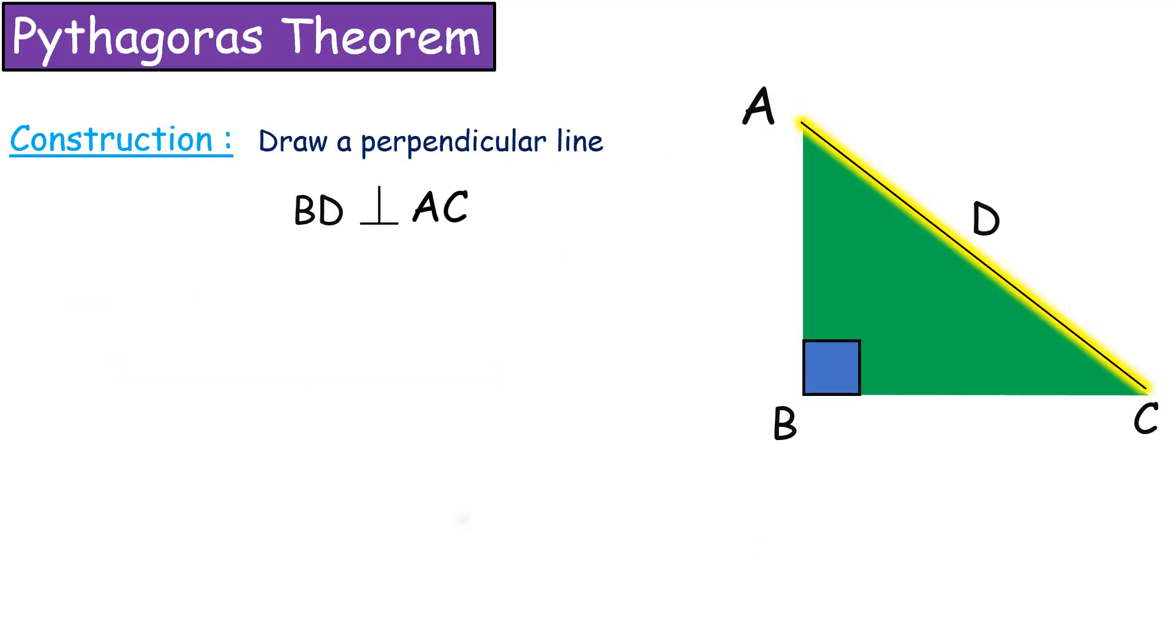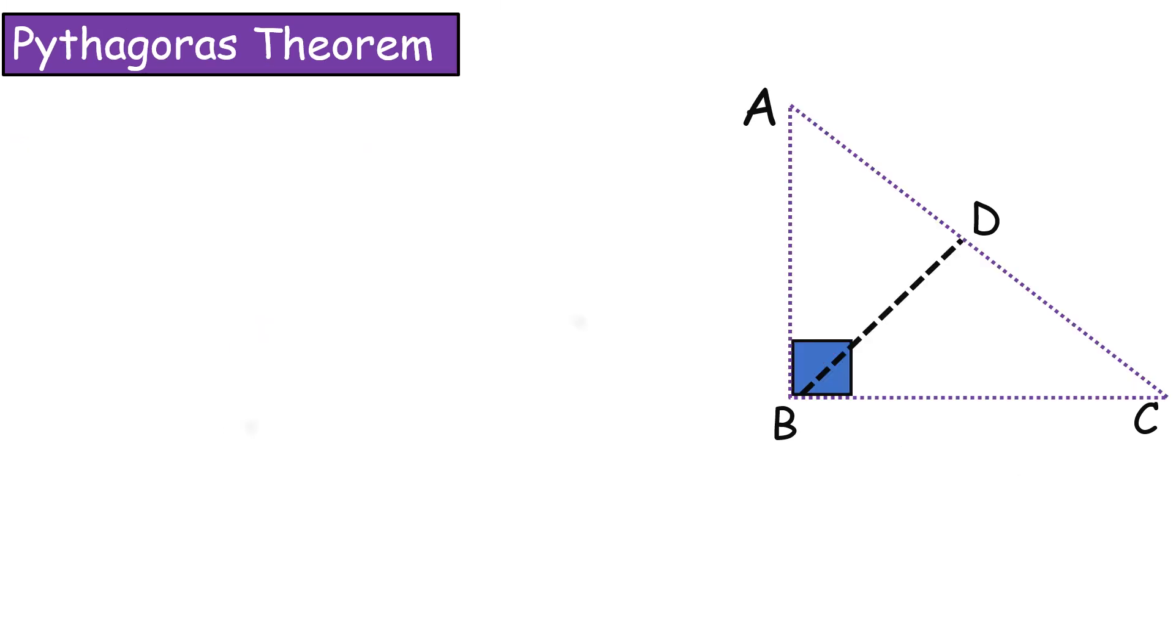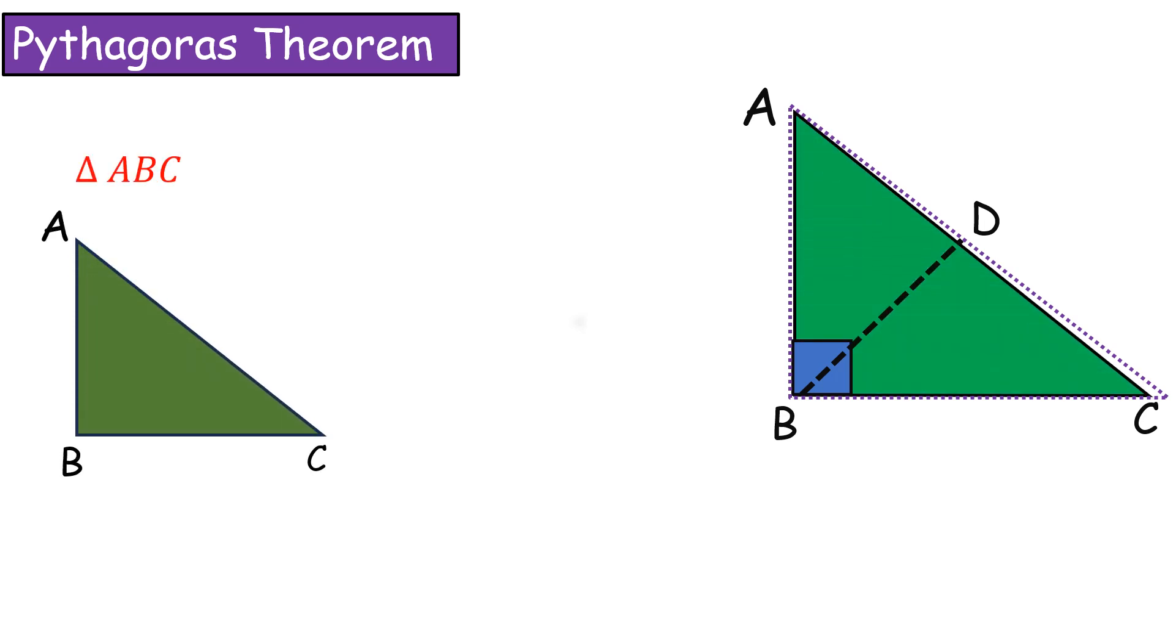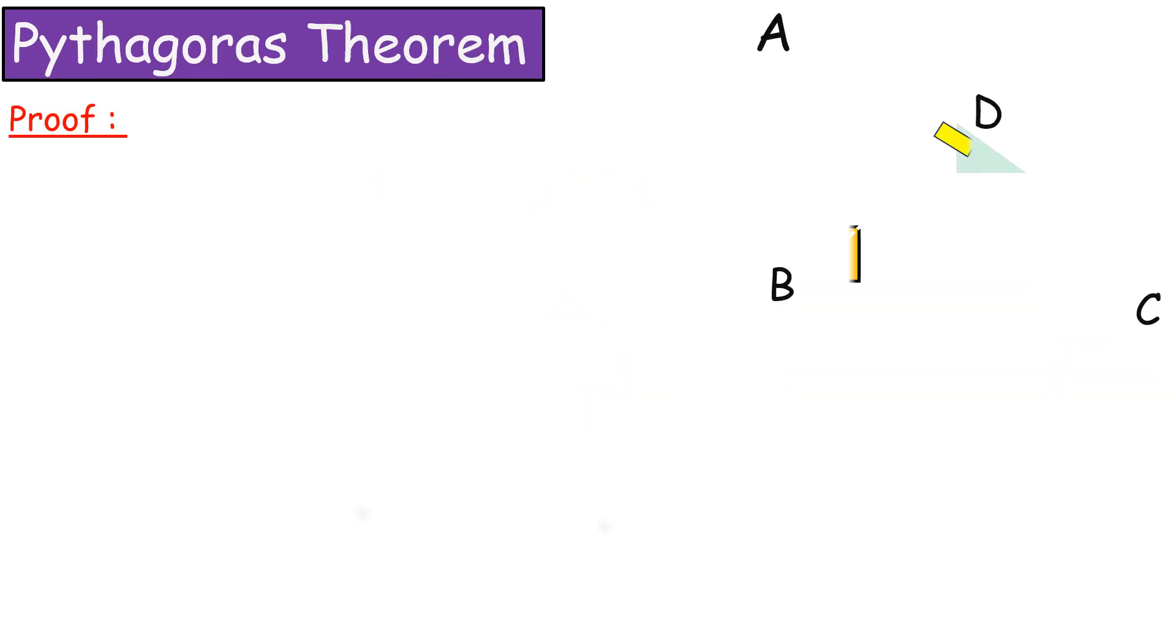See here, when we draw a perpendicular line, this right-angled triangle is divided into two triangles. One is triangle ADB, second one is triangle BDC. So here, three triangles appear: triangle ABC, triangle ADB, and triangle BDC.